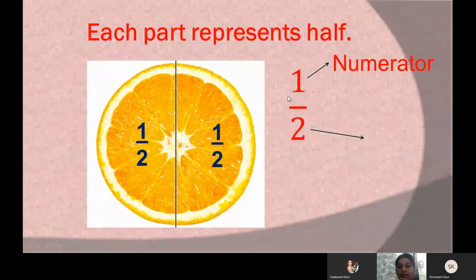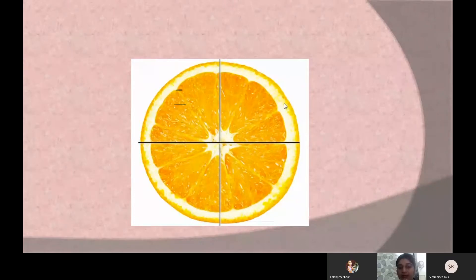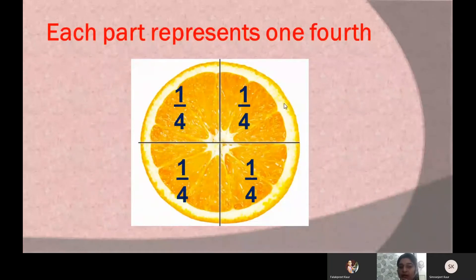The line between 1 and 2 is called the division line. Now if I divide this orange slice into four equal parts, then I get four equal parts of this slice, and each part represents the fraction 1 by 4, which represents one fourth.